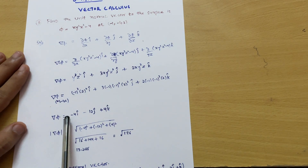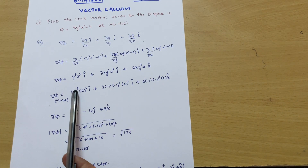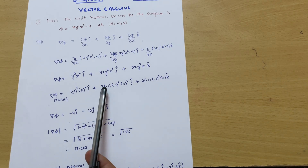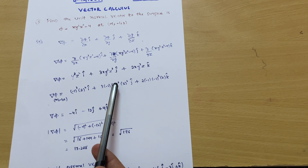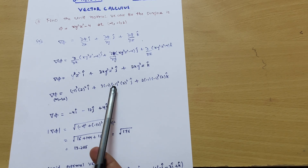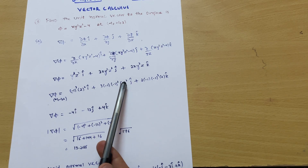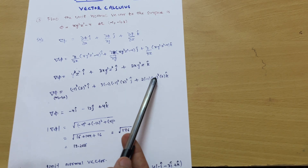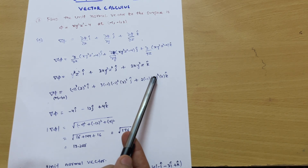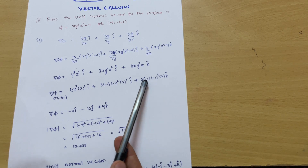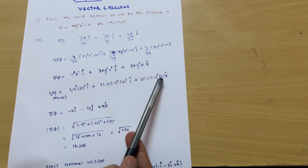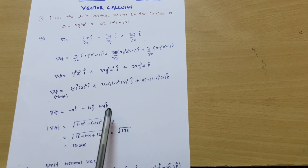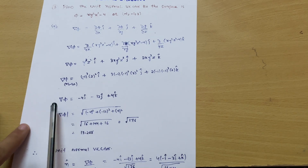Del phi evaluates as follows: (−1)³ is −1 and 2² is 4, so 4 × (−1) = −4 i-cap. For j-cap: (−1)² is +1, so 3 × 1 = 3 and 4 × 3 = 12, giving −12 j-cap. For k-cap: (−1) × (−1)³ is (−1)(−1) = +1, and 2 × 1 × 2 = 4, giving +4 k-cap. So del phi equals −4 i-cap − 12 j-cap + 4 k-cap.